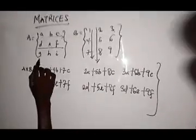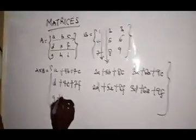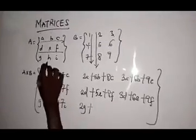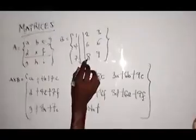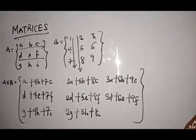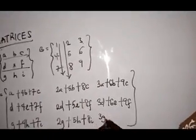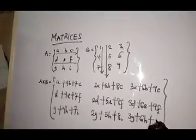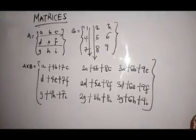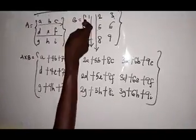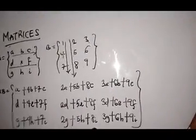The last row: G times 1 is G, plus H times 4 is 4H, plus I times 7 is 7I. Then G times 2 is 2G, plus H times 5 is 5H, plus I times 8 is 8I. Then G times 3 is 3G, plus H times 6 is 6H, plus I times 9 is 9I. This is the basics of multiplication of a 3 by 3 matrix. If it is a 2 by 2, you apply the same row-by-column approach.